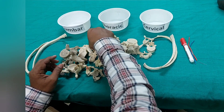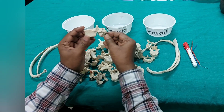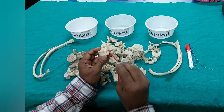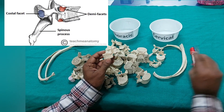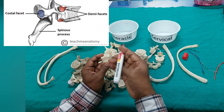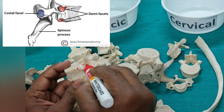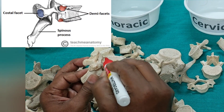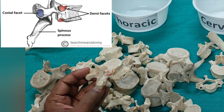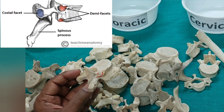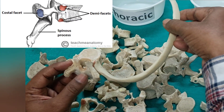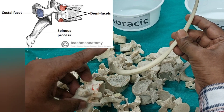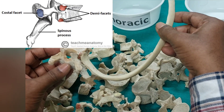Suppose this is one vertebra. On the lateral side, see whether there is any facet or not. This is the facet — can you see it? If I mark it in red color, this is the facet on this side, and this is the facet on the other side. This particular facet is for articulation with the ribs. This part of the rib — the head of the rib — will articulate with this facet.